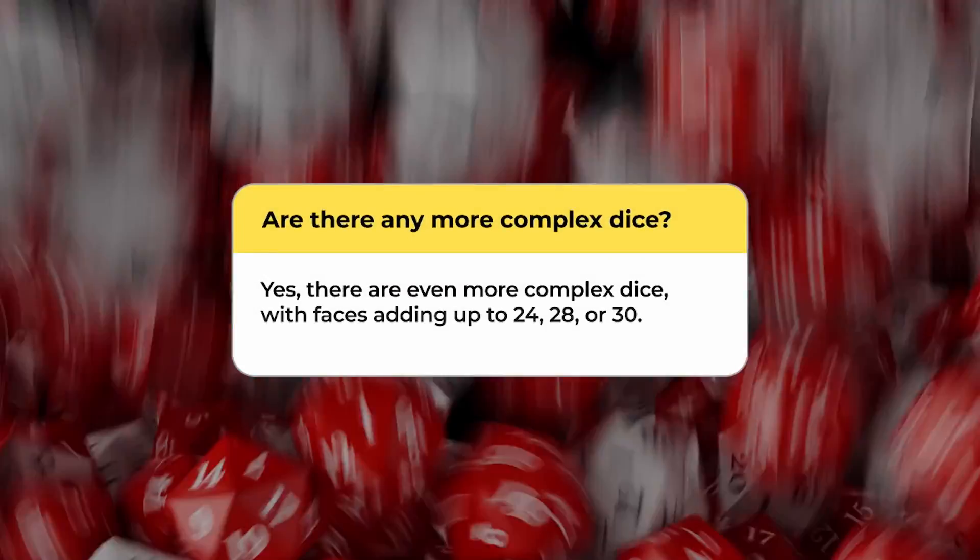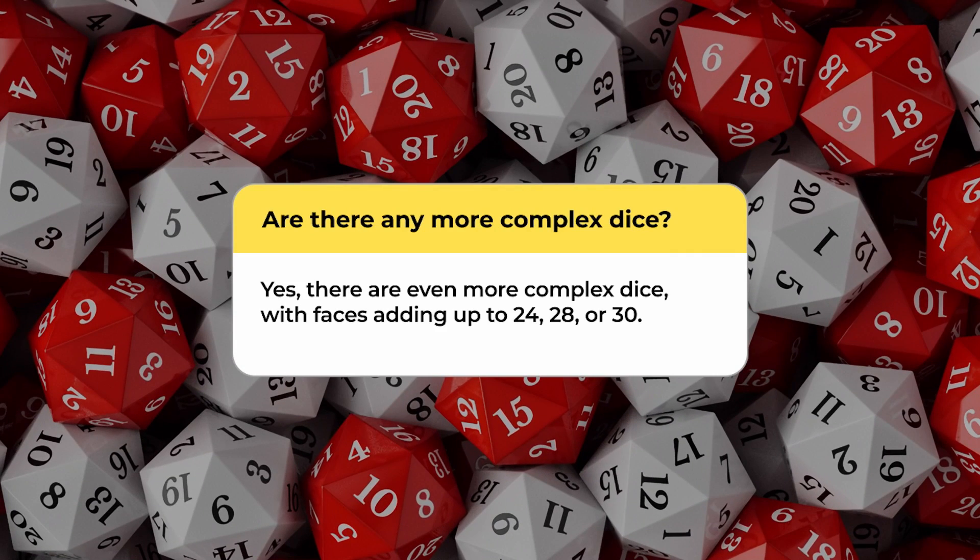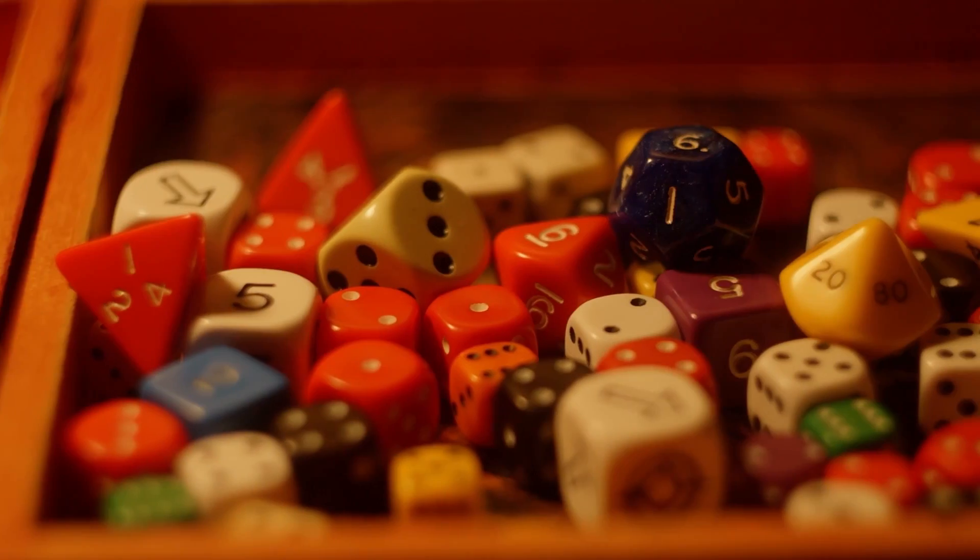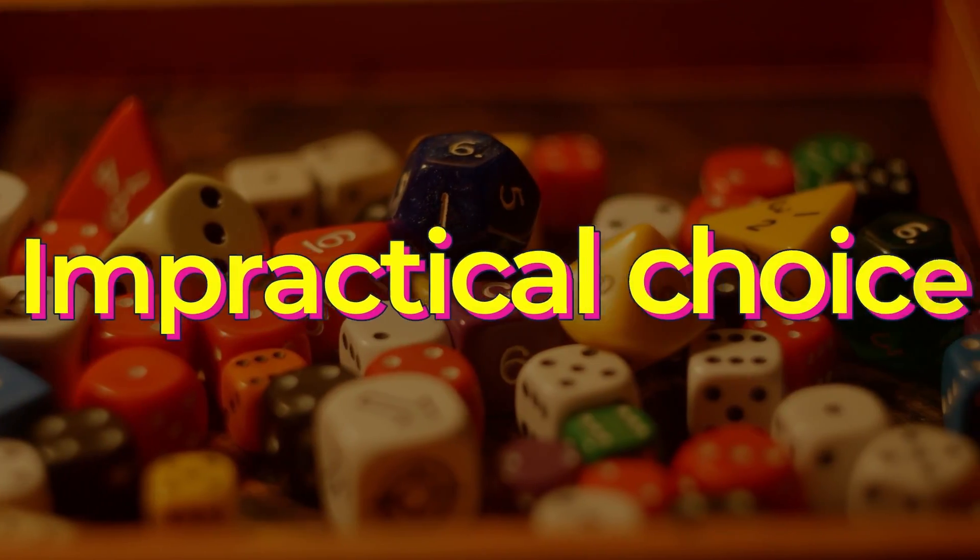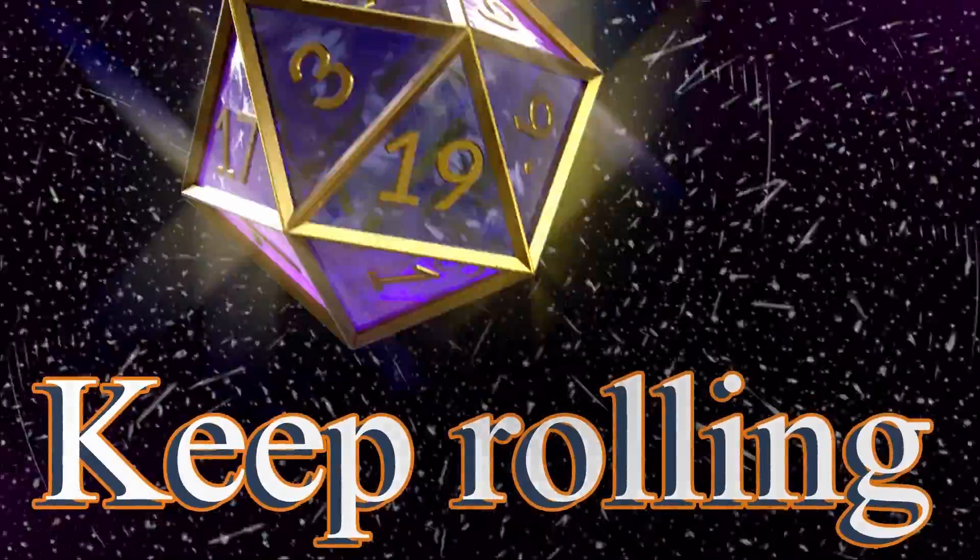But the world of dice doesn't stop there. There are even more complex dice, with faces adding up to 24, 28, or 30. The rarer the dice, the likelier it is to be an impractical choice. These uncommon variations often keep rolling when thrown due to their shape, barring some external force.